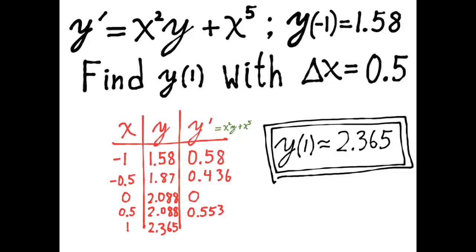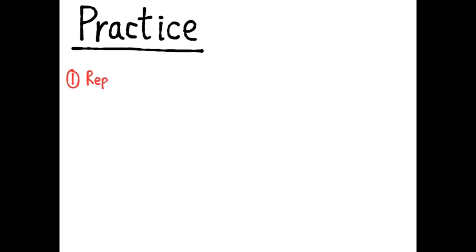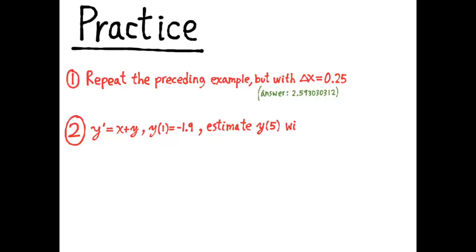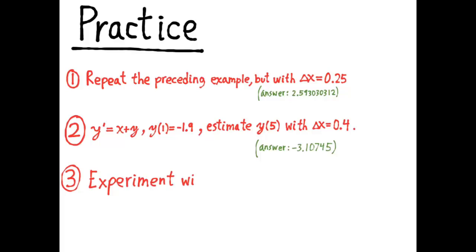Now practice it on your own. Here are some practice examples. First, repeat the preceding example but this time use a smaller delta x — use delta x equals one-quarter. Then instead of four steps, you'll have eight steps, and if you can get the correct answer with that, you really do understand what you're doing. Practice exercise two: try the differential equation y prime equals x plus y with the initial condition y of 1 equals negative 1.9, and try to estimate the value of y of 5 using delta x equals 0.4. The correct answer is given for that one also. And practice number three: just experiment with your favorite differential equation and initial condition.